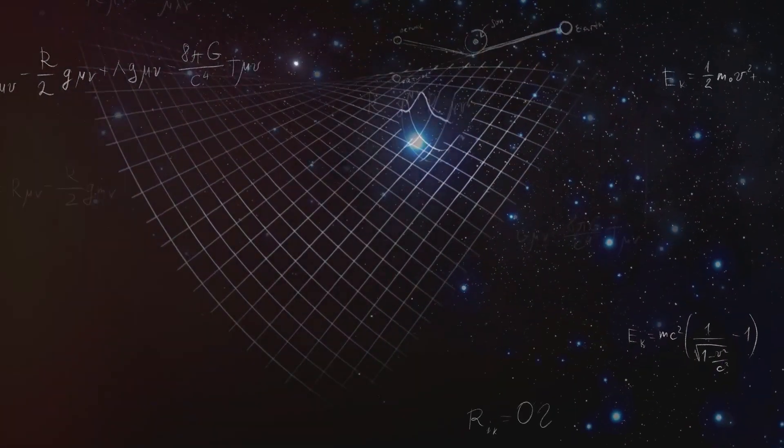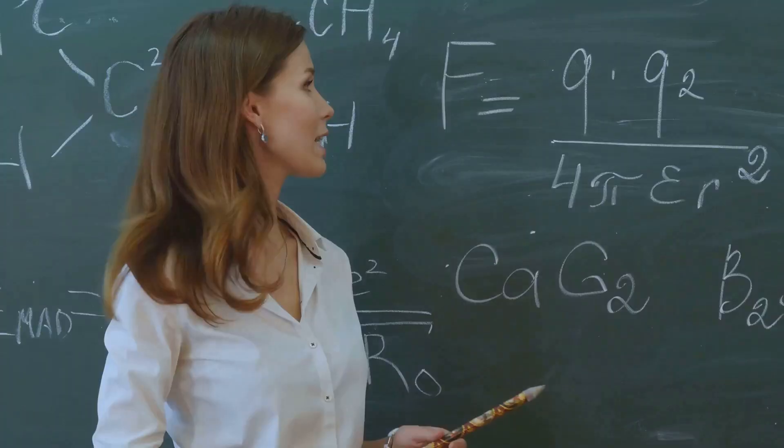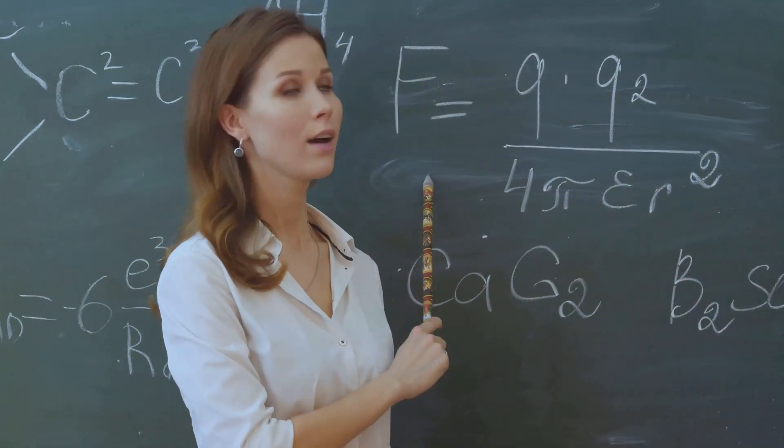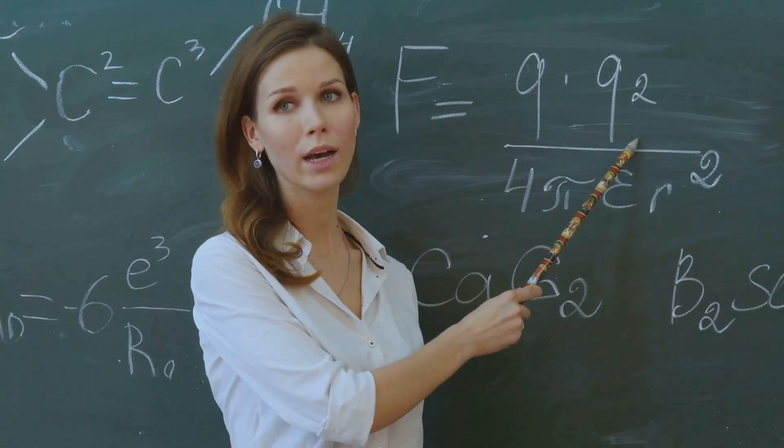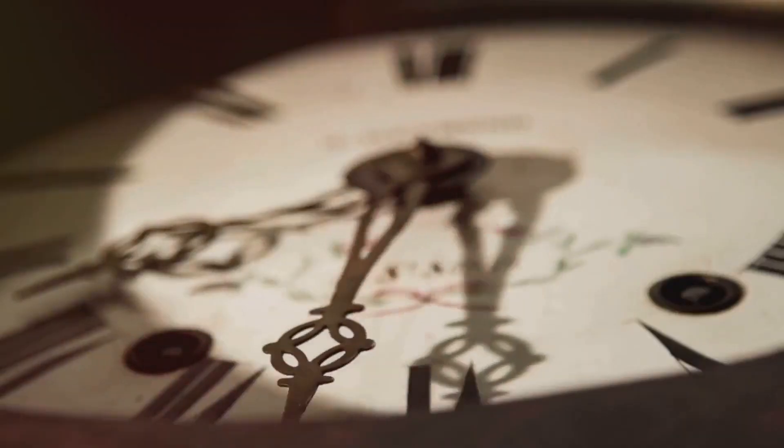This is about how information moves and changes within the very fabric of the universe itself. At the heart of infodynamics lies a fundamental principle known as the second law. This law guides the flow of information, much like an arrow pointing the way for time.